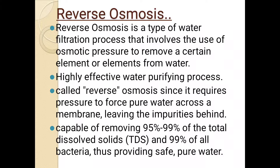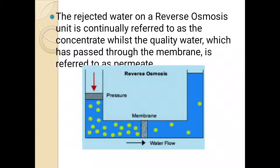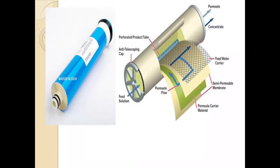Reverse osmosis is recommended for the water purification process. The rejected water on the reverse osmosis unit is referred to as the concentrate, while the quality water that has passed through the membrane is referred to as the permeate. The membrane module consists of components including the permeate carrier material, semi-permeable membrane, feed water carrier, and anti-telescoping cap.